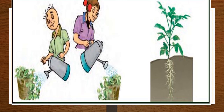In this picture you can see Paheli and Bujo. Can you identify who is watering the plants correctly and why? We can find that Paheli is watering the plants correctly, because when you water the plants, the plant should be watered near the root. Let us find out why plants need roots and what is the importance of the root through some activities.